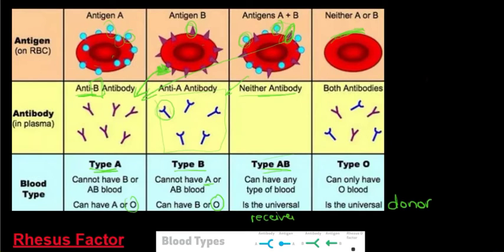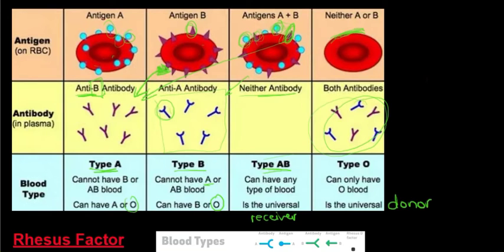Blood group AB is the universal receiver. Blood group O cannot receive from AB, A, or B because their antibodies will react to the antigens on those red blood cells. Blood group O can only receive from other O types. While O is the universal donor, they can only safely receive from other O donors due to their anti-A and anti-B antibodies.